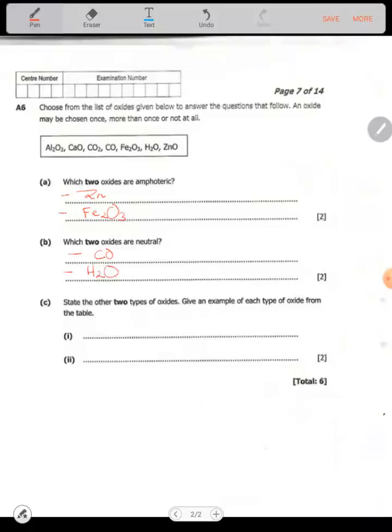State the other two types of oxide and give an example of each type from the table. So apart from amphoteric and neutral, we have basic oxides. Basic oxides...